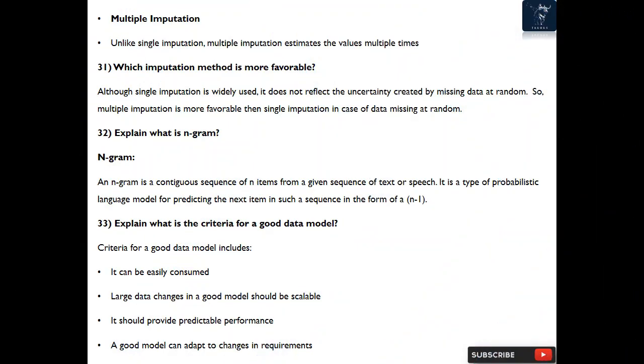Question 31: Which imputation method is more favorable? Although single imputation is widely used, it does not reflect the uncertainty created by missing data at random. So multiple imputation is more favorable than single imputation in case of data missing at random.